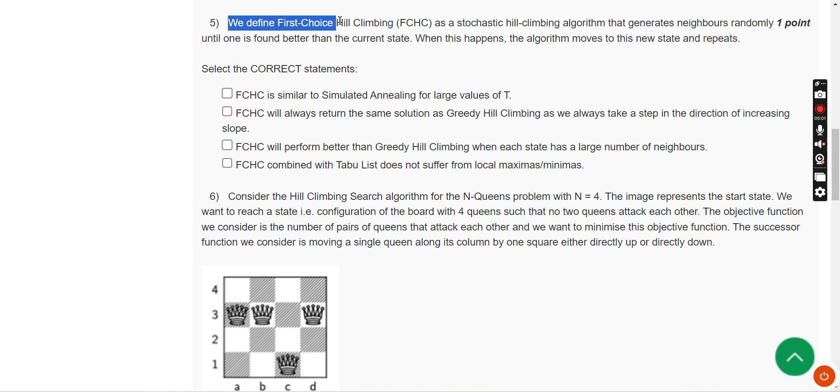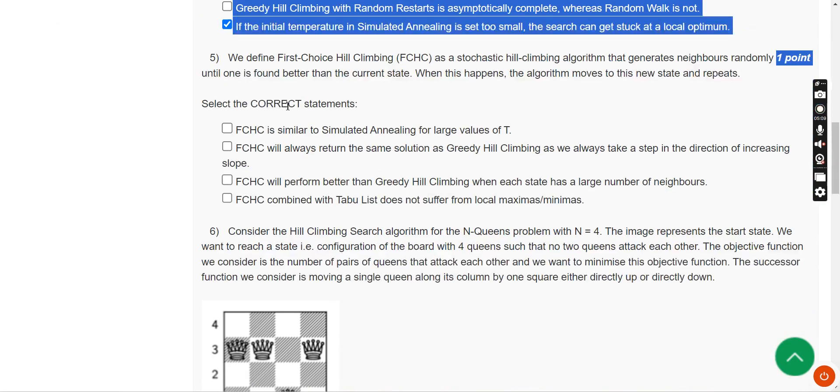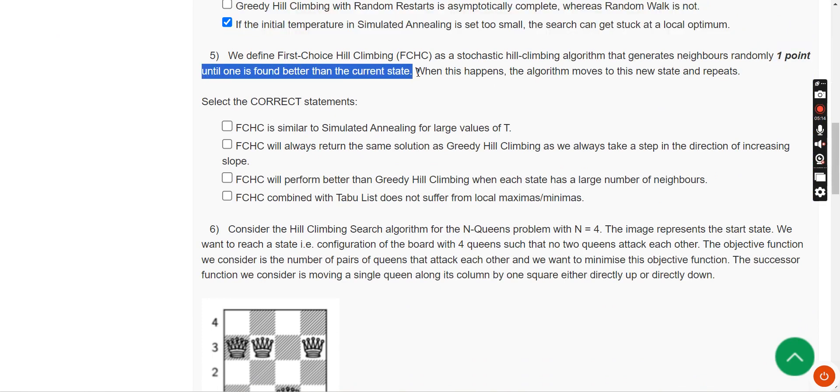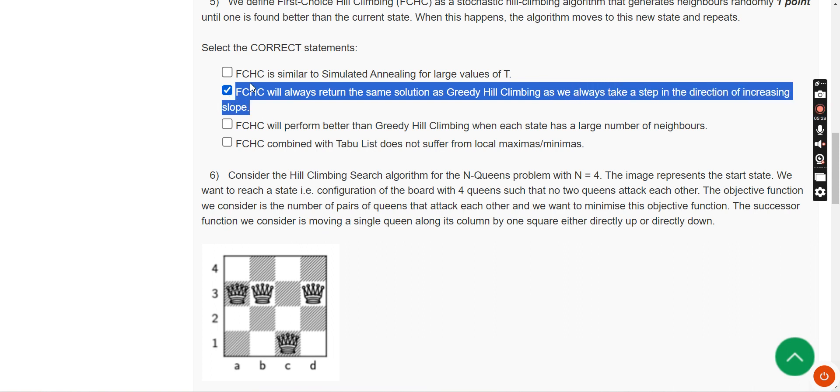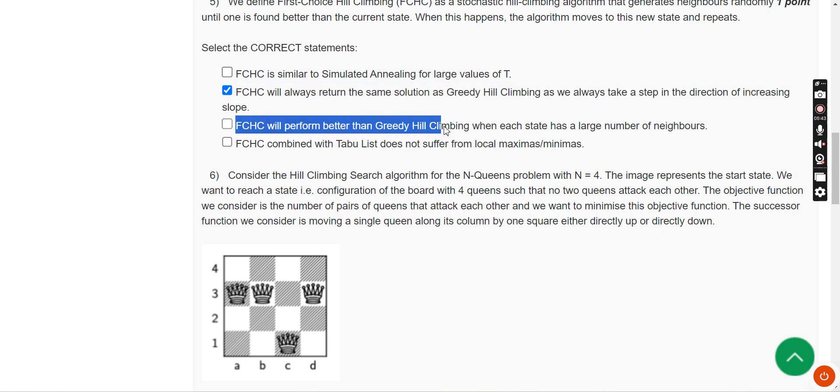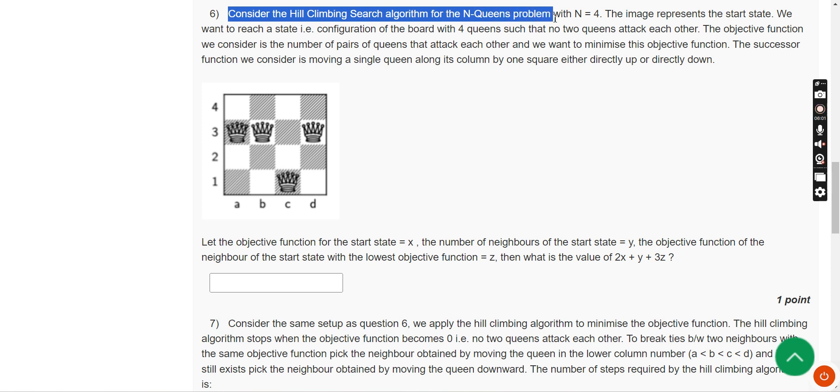Fifth question: we define first-choice hill climbing (FCHC) as a stochastic hill climbing algorithm that generates neighbors randomly until one is found better than the current state. When this happens, the algorithm moves to this new state and repeats. Select the correct statements about FCHC. For the fifth question I have got two probable solutions. First one is second option: FCHC will always return the same solution as greedy hill climbing as we always take a step in the direction of increasing slope. The other one is third option: FCHC will perform better than greedy hill climbing when each state has a large number of neighbors.